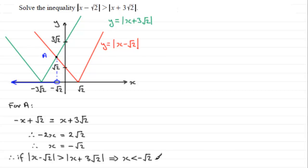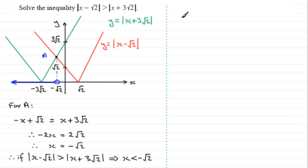That's the first way. Now there's an alternative method — it's not one you can always apply, but you can do it in this question because we have two terms each with a mod sign around them, so they're both going to be positive. When this happens we can square both sides and keep the inequality sign. Squaring both sides: x minus root 2 all squared is greater than x plus 3 root 2 all squared.